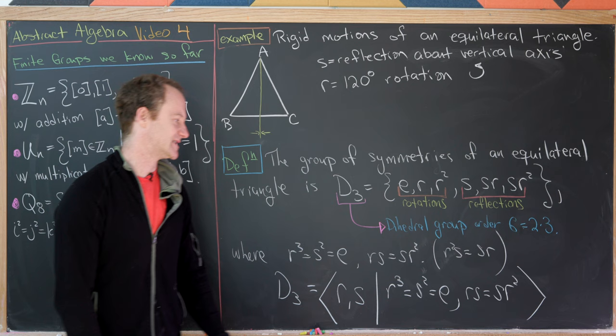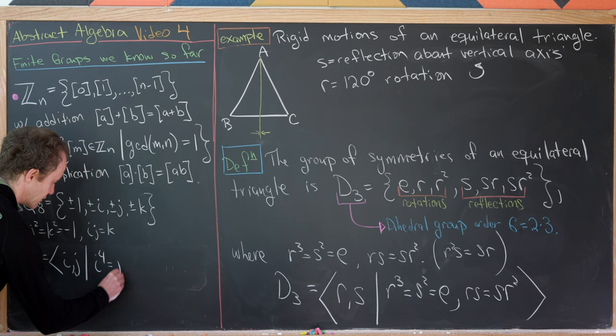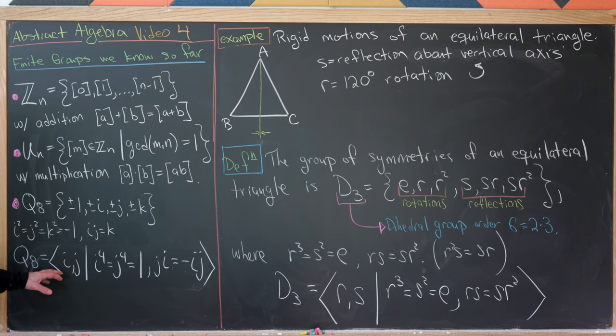Similarly, Q8 can be written in generators and relations form. It is generated by i and j, with i⁴ = j⁴ = 1 since they square to negative one, and j times i equals negative i times j. We don't need k at all — we can replace every k with i times j to get a full generators and relations formula for Q8.